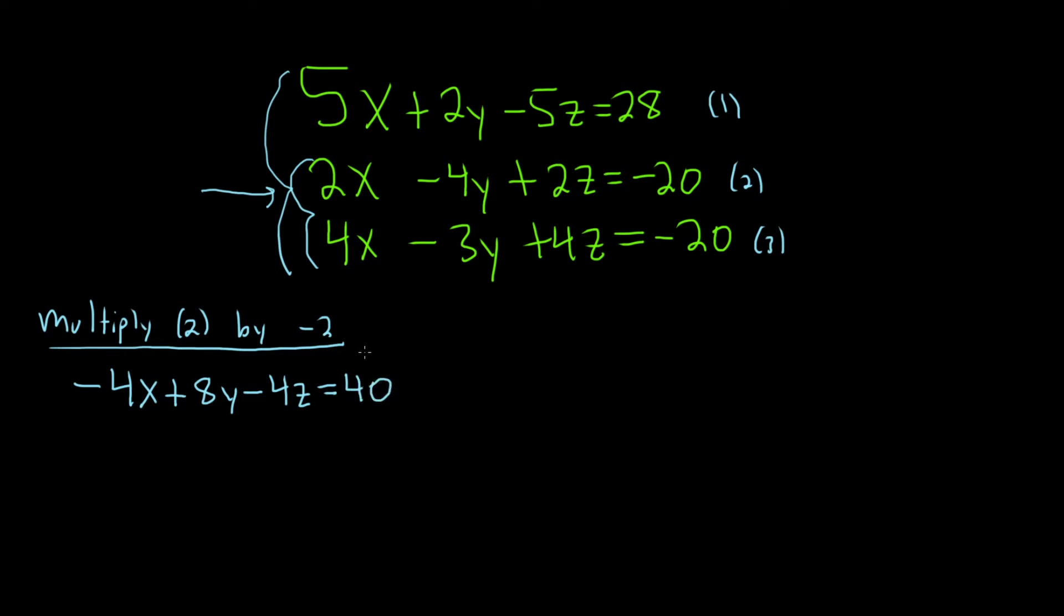It's really important to be careful. After you do an operation, go back and check. Negative 2 times 2x is negative 4x. Negative 2 times negative 4y is positive 8y. Negative 2 times 2z is negative 4z. Negative 2 times negative 20 is positive 40.